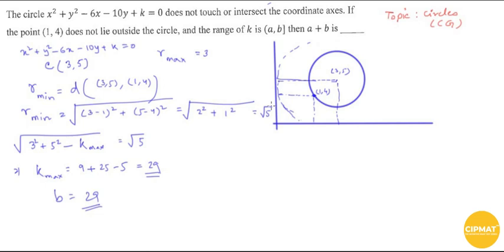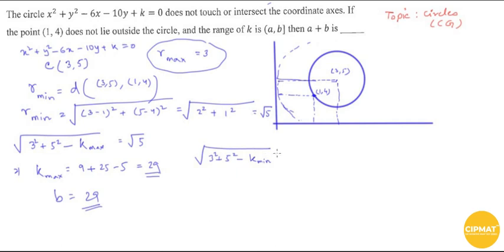The maximum radius r_max = 3, since the circle must not touch the x-axis (the center's y-coordinate is 5, but the closer axis constraint gives 3 from the x-axis distance — actually the distance to the nearest axis is 3). So √(9 + 25 - k_min) = 3. Squaring: 34 - k_min = 9.